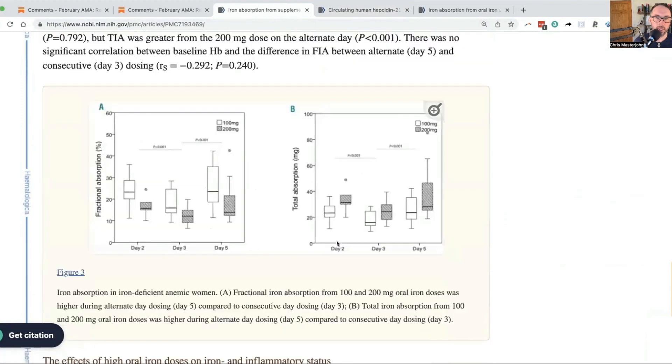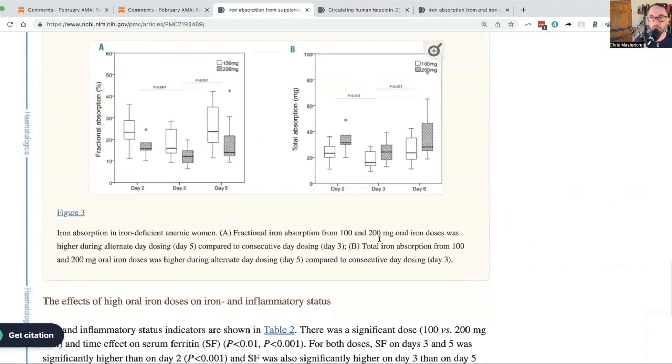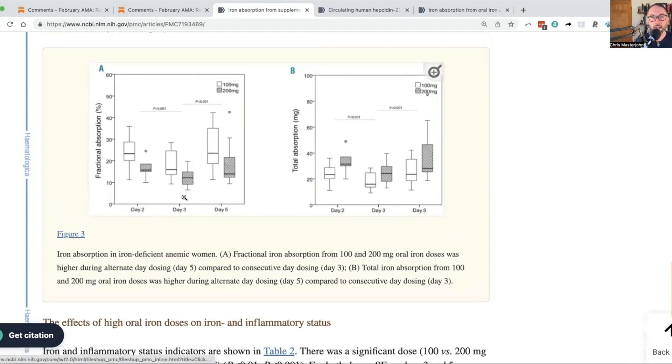What they did in this study was they gave people 100 milligrams of iron every day or 200 milligrams of iron every day, or they gave these doses every other day. So what you're seeing is day two is the absorption of these two supplements.